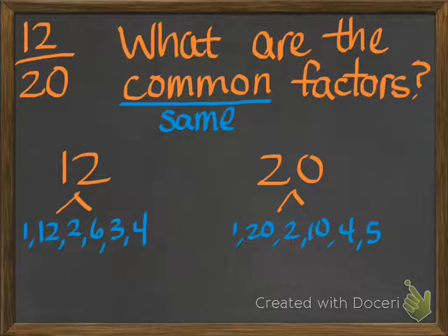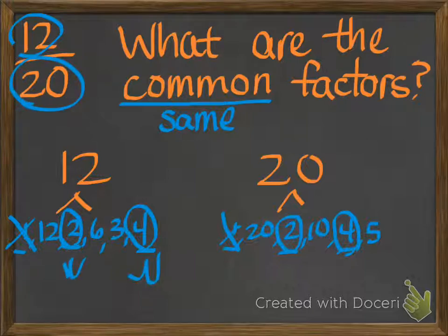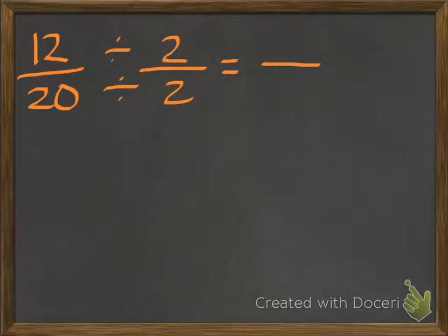So I'm going to look for the common — or the same — factors. We have 1 in both of them, but we're not going to count 1. 2 is in both of them — it's a common factor. 6 is a factor of 12 but not of 20. 3 is a factor of 12 but not of 20. And 4 is a factor of 12 and a factor of 20. So the common factors are 2 and 4. I'm going to choose one of those and divide 12 and 20 by the same factor. I'll choose 2 to start. 12 divided by 2 is 6, and 20 divided by 2 is 10.